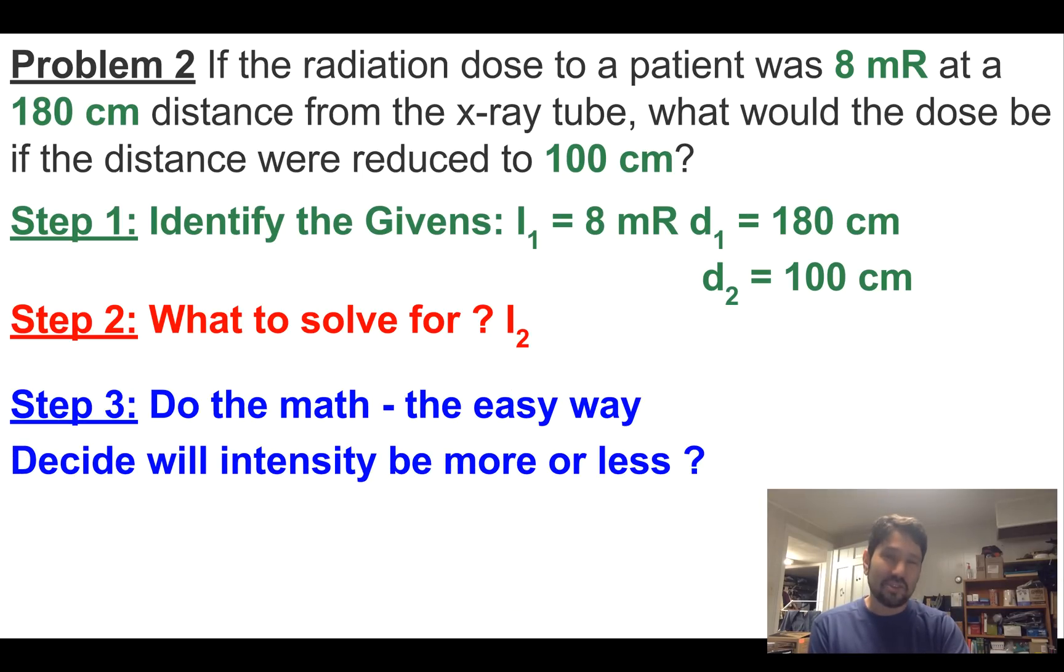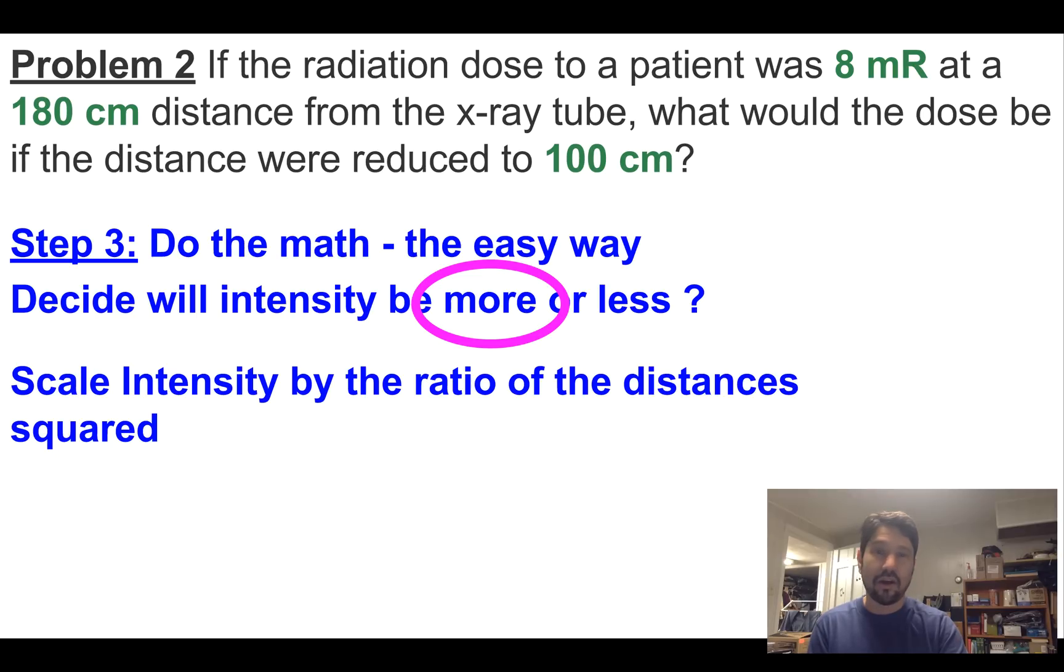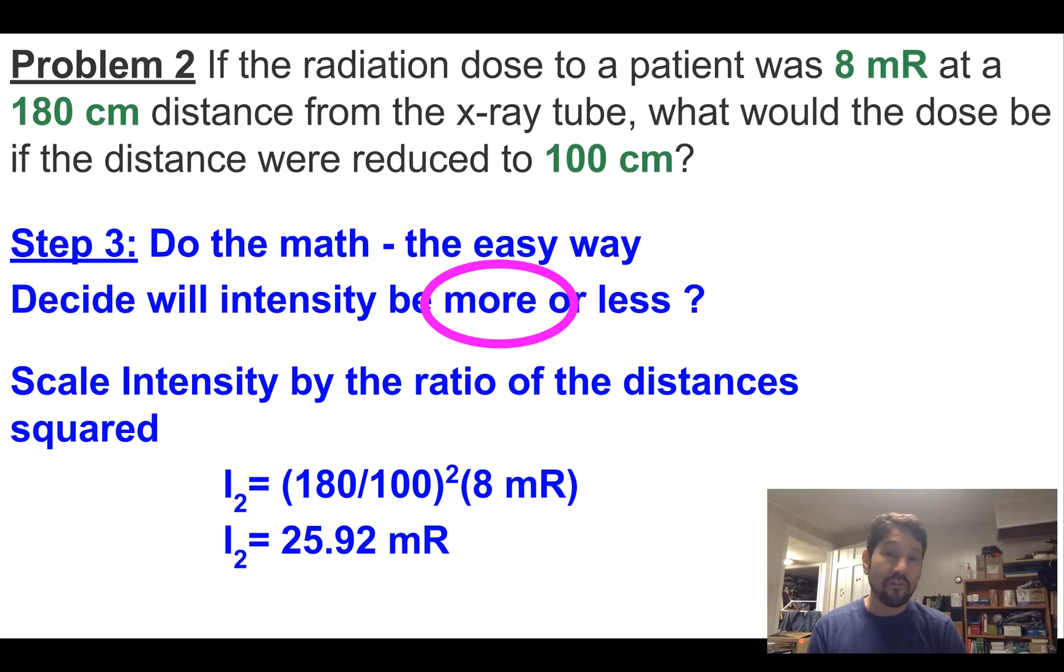So let's try the math the easy way. Okay. It's going to be more, right? We're going from 180 centimeters down to a hundred centimeters. We're stepping closer to the fire. The fire is going to feel more intense, okay? And now we're just scale our intensity by the ratio of the distances squared. Don't forget to square. So 180 over a hundred squared times eight millirads, boom, gets us right to 25.92 millirads.